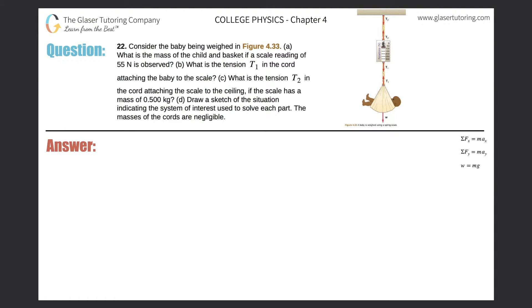Problem 22, letter a: Consider the baby being weighed in figure 4.33. What is the mass of the child and basket if a scale reading of 55 newtons is observed? So the scale reads 55 newtons — that is a force. The force pointing down for the baby and the basket is 55 newtons.